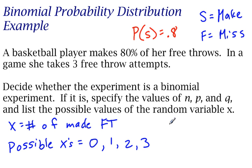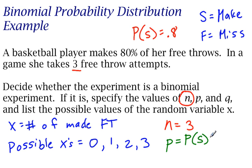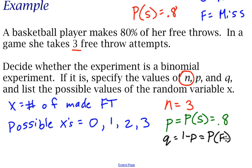Now let's define the rest of these variables. N is the total number of trials — she's going to take 3 free throw attempts, so N equals 3. Little p is the probability of a success, which we just talked about: the probability of a make is 0.8. And Q is equal to 1 minus p, or 1 minus the probability of a success. So Q, the probability of a failure, is 1 minus 0.8, which is 0.2.